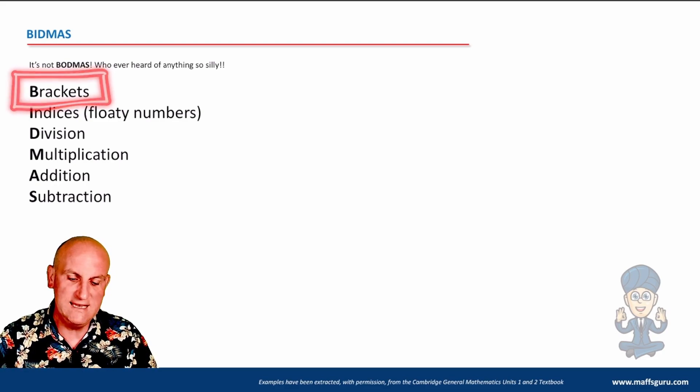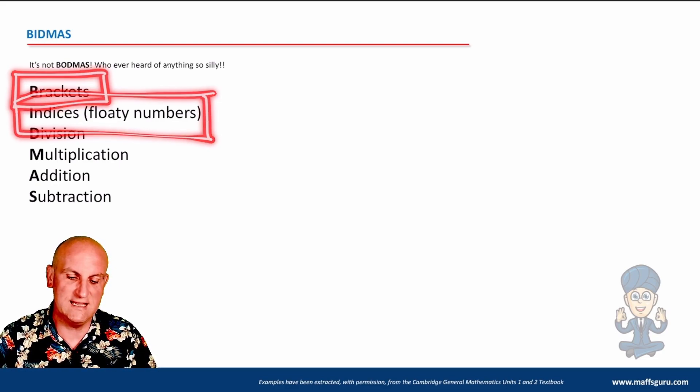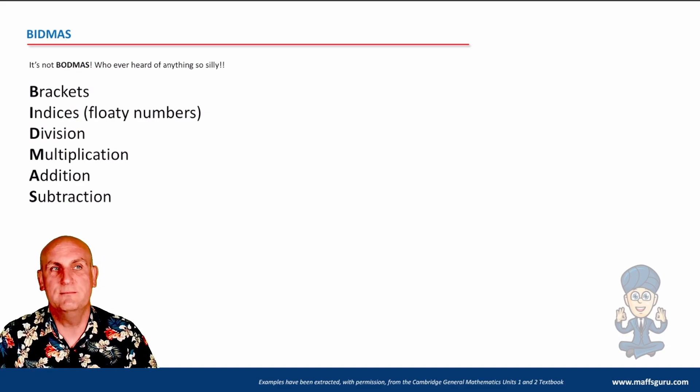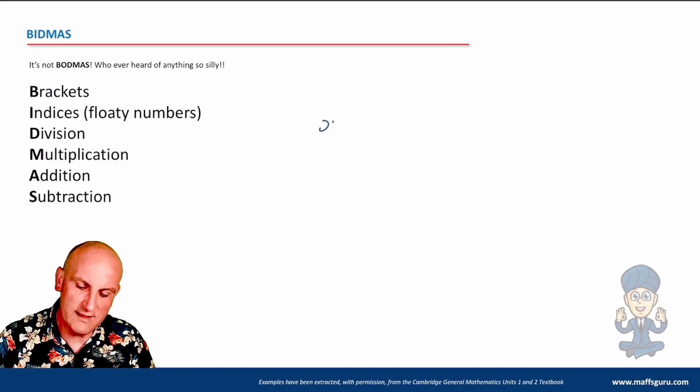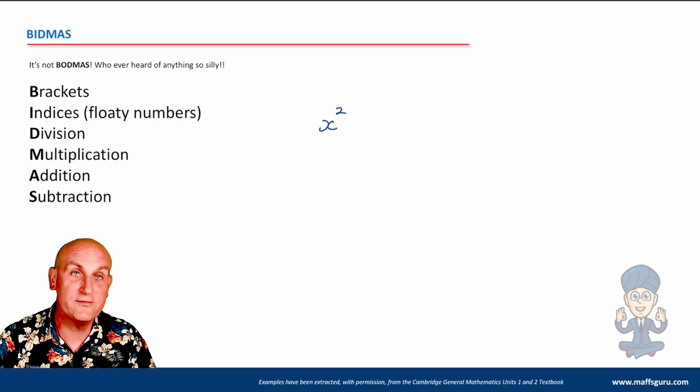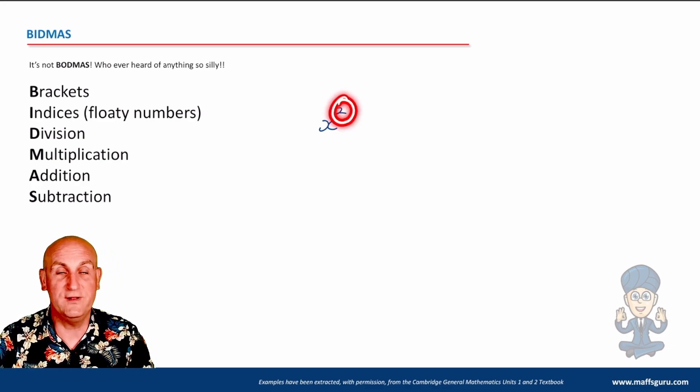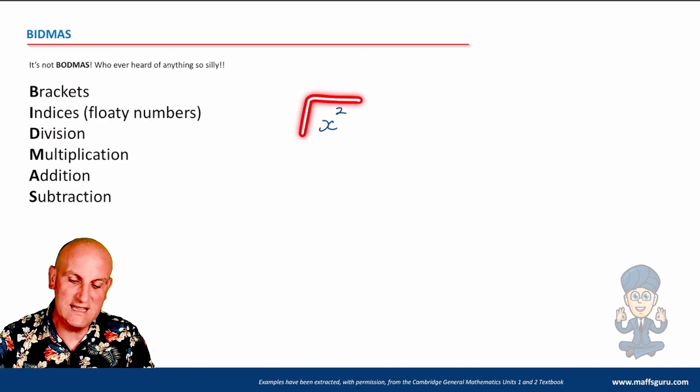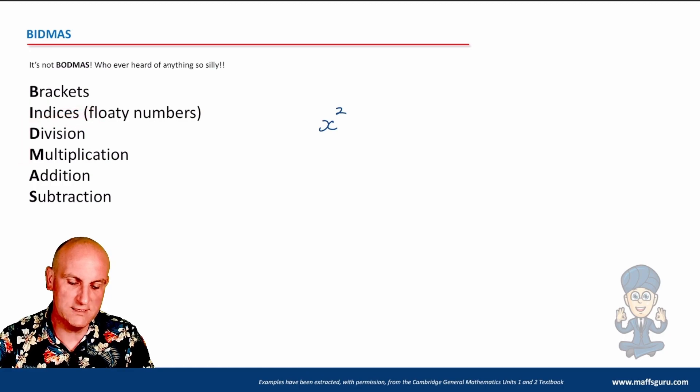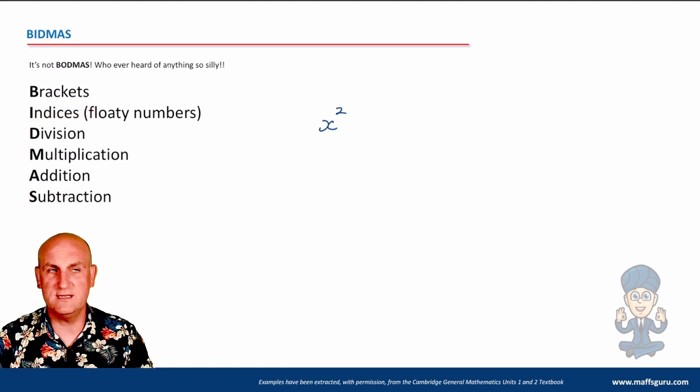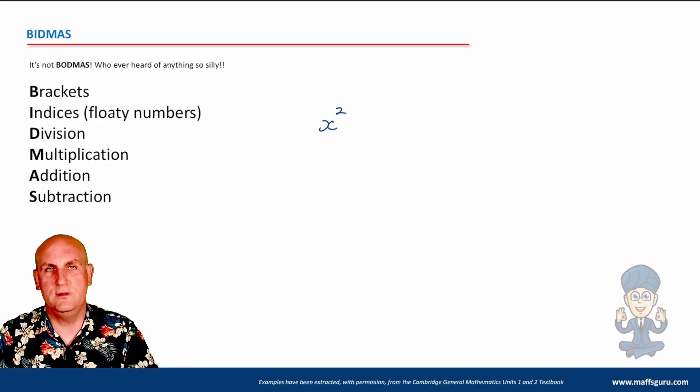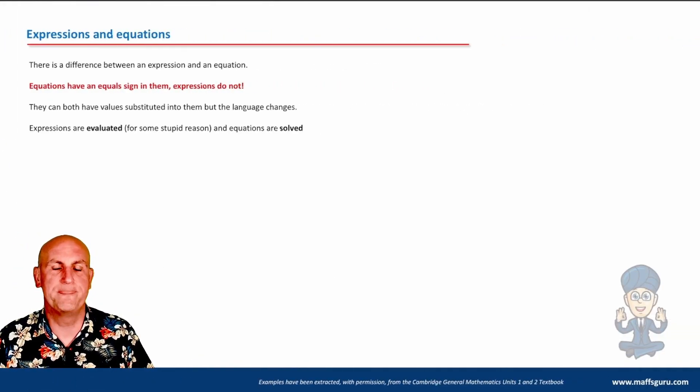So brackets. Indices. Now, you're going to say, what on earth is an index? It's a power, obviously, or an exponent. If I wrote something like X with a floaty two, that there is a floaty number. It is an index. So basically anything with floaty numbers, we deal with next, then division, then multiplication, then addition, and then subtraction. Depending on the order of the question and what's there, that's the order that you actually solve stuff.